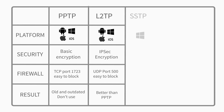SSTP, or Secure Socket Tunneling Protocol, is a proprietary standard owned by Microsoft. Although it's available for Linux and even macOS, it's still primarily a Windows-only platform. Unlike PPTP and L2TP, SSTP uses SSL 3.0, which means it's highly secure. However, since it's a proprietary protocol, the code is not open to the public and can't be fully audited. It includes the ability to use TCP port 443, meaning it can bypass most firewalls.